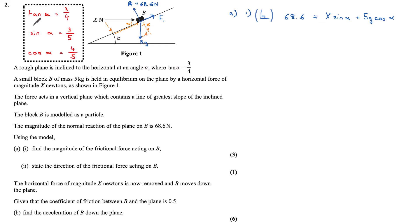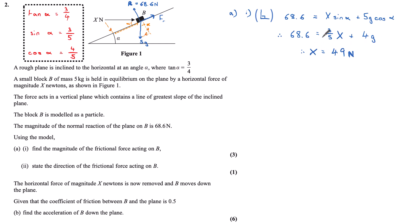Using the Pythagorean triple values, I substitute 3 fifths for sin alpha and 4 fifths for cos alpha. Four fifths times 5 gives 4g. Subtracting 4g from both sides, then multiplying by 5 and dividing by 3, I get a value of X equal to 49 newtons.